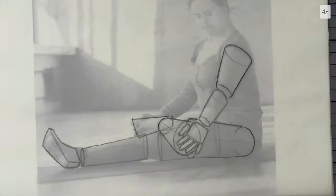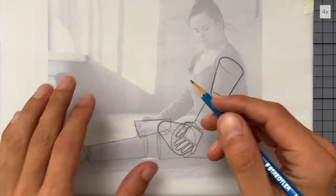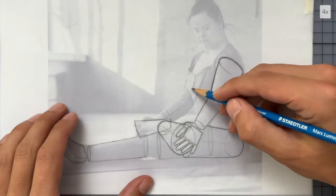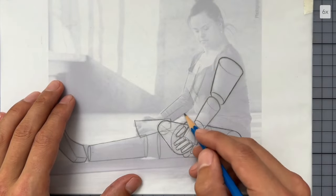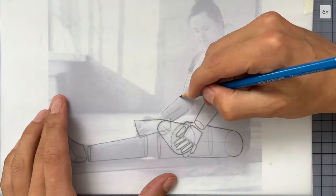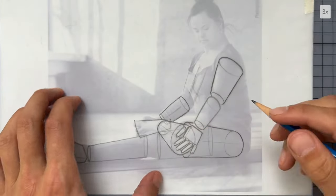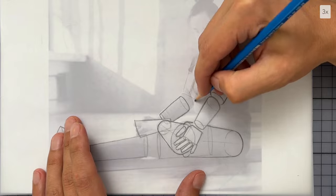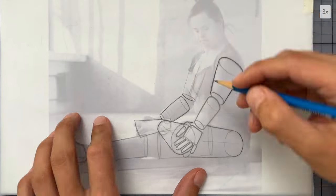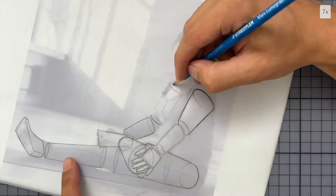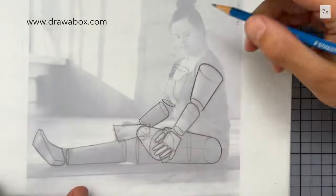On we go to the other arm. I first establish the direction of the forms. Then I draw the sides of the cylinder, remove the center line and the side on the ellipse. I'm estimating how much or how little I would see of the ends of the cylinder. If you're struggling with this, I highly recommend you check out the exercises on drawabox.com.